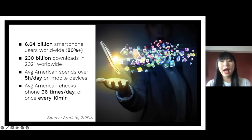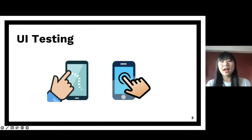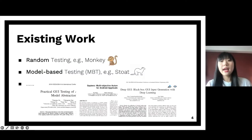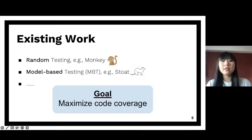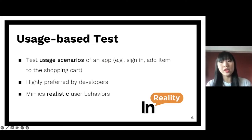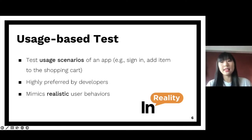Given how popular mobile apps are, it's very important to assure their quality by testing them, and our paper August focuses on test generation specifically. The tests August aims to generate are UI tests — those consist of events where the user interacts with the app's UI, like swipe or click a button. We have a complementary goal of generating usage-based tests, which exercise a specific usage scenario like sign-in or add item to shopping cart, and they are highly preferred by developers since they can mimic realistic user behaviors.